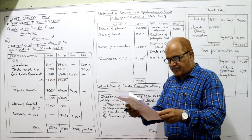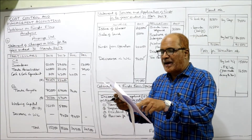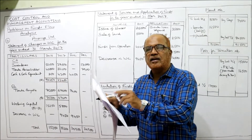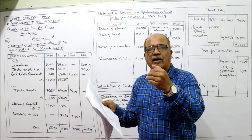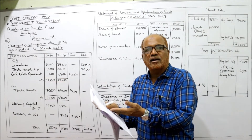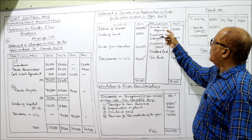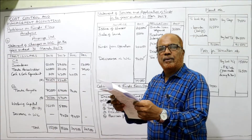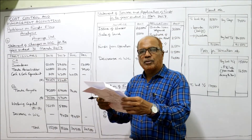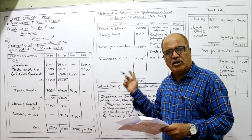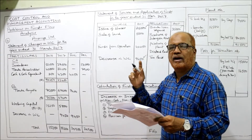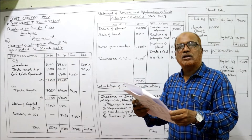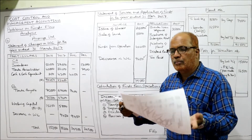Next, bank loan: last year 35,000, current year zero — bank loan is fully repaid. Bank loan repaid 35,000 taken on the application side. Trade payable already taken in working capital. Short-term provisions have no amount. Provision for taxation will be adjusted separately. Then fixed assets — note number 2.